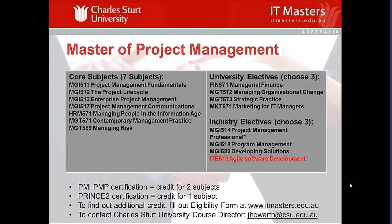The Master of Project Management is 12 subjects long, containing very industry-focused material based on actual industry certifications from Agile and PMP, as well as more academic-style subjects. You can get credit into this program based on certain industry certifications — PMP gives credit for up to two subjects, and the Agile Certified Practitioner gives credit for another subject. You don't necessarily need an undergraduate degree; we'll accept people with a minimum of three years' professional work experience. Fill out the eligibility form at itmasters.edu.au.